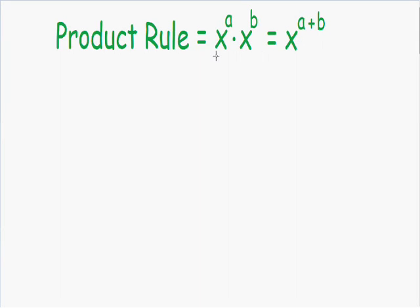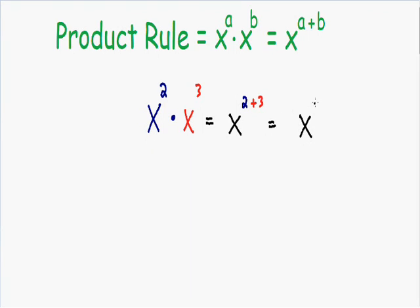Let's go over an example. Let's say we have x with an exponent of two and that's being multiplied by x with an exponent of three. Both of these exponents have a common base of x, and since the base is being multiplied with each other we can add the exponents — two plus three. Two plus three is equal to five, so the only thing we have to do is add the exponents.